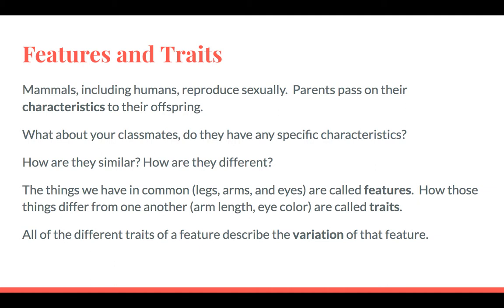Yesterday we learned about how plants reproduce sexually and things like bacteria and paramecium reproduce asexually. The difference is that in sexual reproduction there needs to be a sperm cell and an egg cell that get combined to make the offspring. In asexual reproduction, there doesn't need to be that — the bacterium or paramecium takes in enough nutrients until it can literally split in half, which is called binary fission.